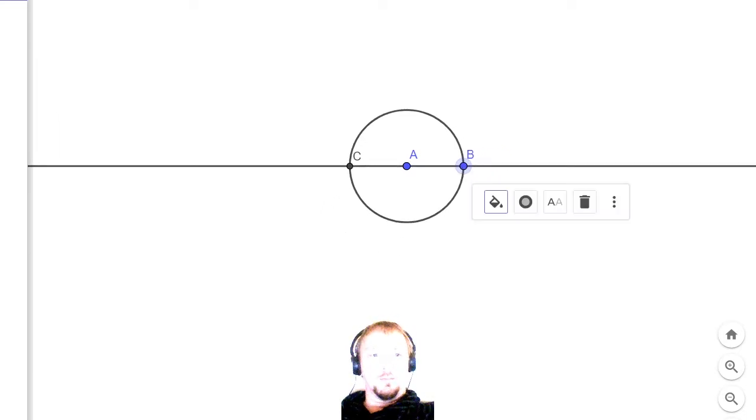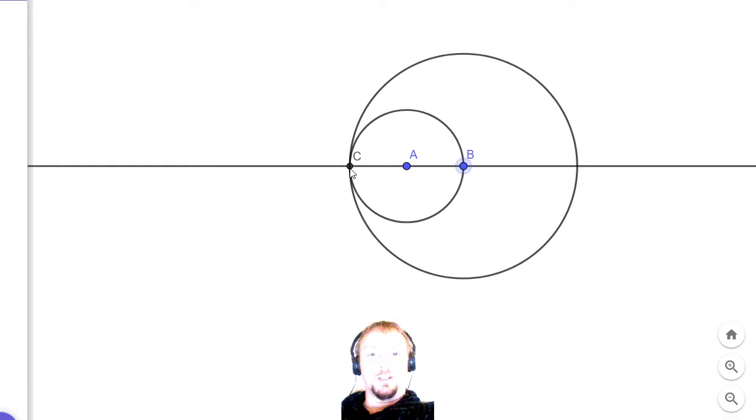Next thing is we create a circle with center point B running through C. We'll do the same on the other side from C running through B like so.